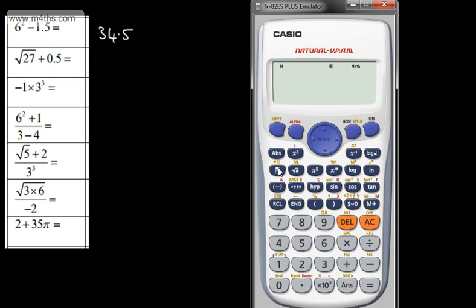The first thing we need to do is use the fraction button. The fraction button is just here. Then we're going to have 6 and we need to square that. So I can either use the square button or I could use the power button. I'm going to use the power button just for something a little different. Then we need to come out to that power. If I don't and then press plus 1, that's going to give me 6 to the power of 2 plus 1, which is 6 to the power of 3, which we don't want.